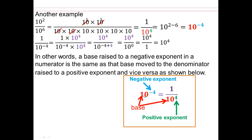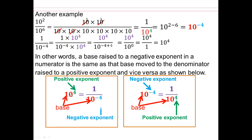The base that's in the numerator goes and sits in the denominator. So if you have a base to a negative exponent in the numerator, it will go sit in the denominator with a positive exponent. Similarly, if you have a negative exponent in the denominator, then the base moves from the denominator to the numerator, and the negative power becomes a positive power. Look very carefully — this is going to help you tremendously.